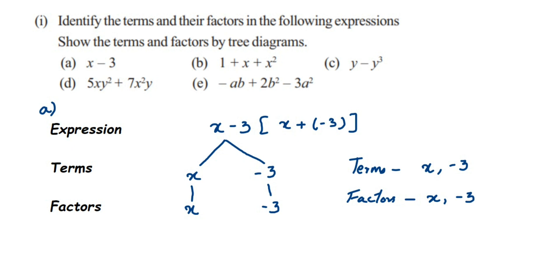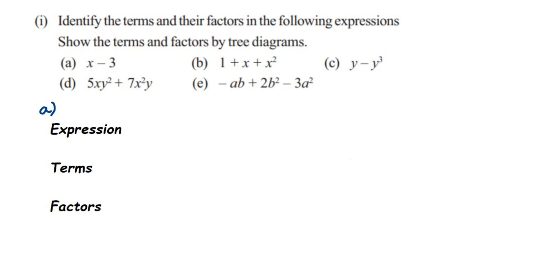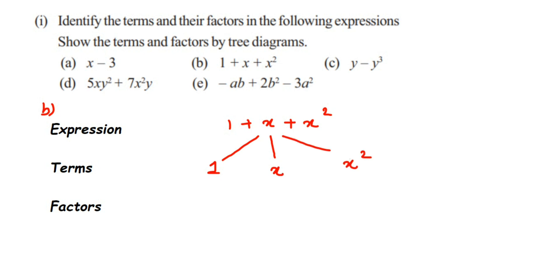Now let's go to the second question: 1 plus x plus x square. The expression is 1 plus x plus x square. There are three terms separated by plus sign, so there will be three branches. One is 1, the second is x, and the third is x square. Now we have to find out the factors for each term. For the constant 1, the factor is 1. For x, the factor is also x. For x square, there are two x's present, so its factors are x and x — and x times x gives us x square.